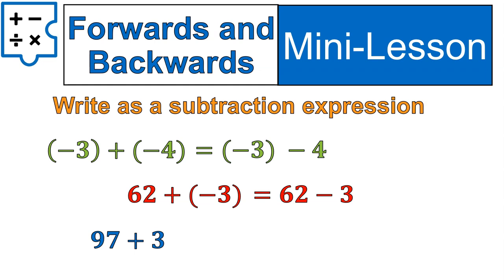97 plus 3. We could rewrite this as 97 minus negative 3 if we really wanted to make our lives more complicated. I don't recommend doing it but they are equivalent expressions.